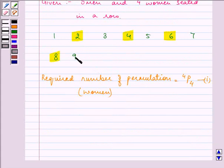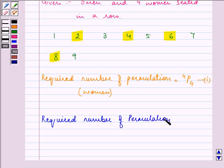Whereas 5 men will occupy the 5 odd places. So required number of permutation is equal to 5P5, that is the second equation and that is for men.